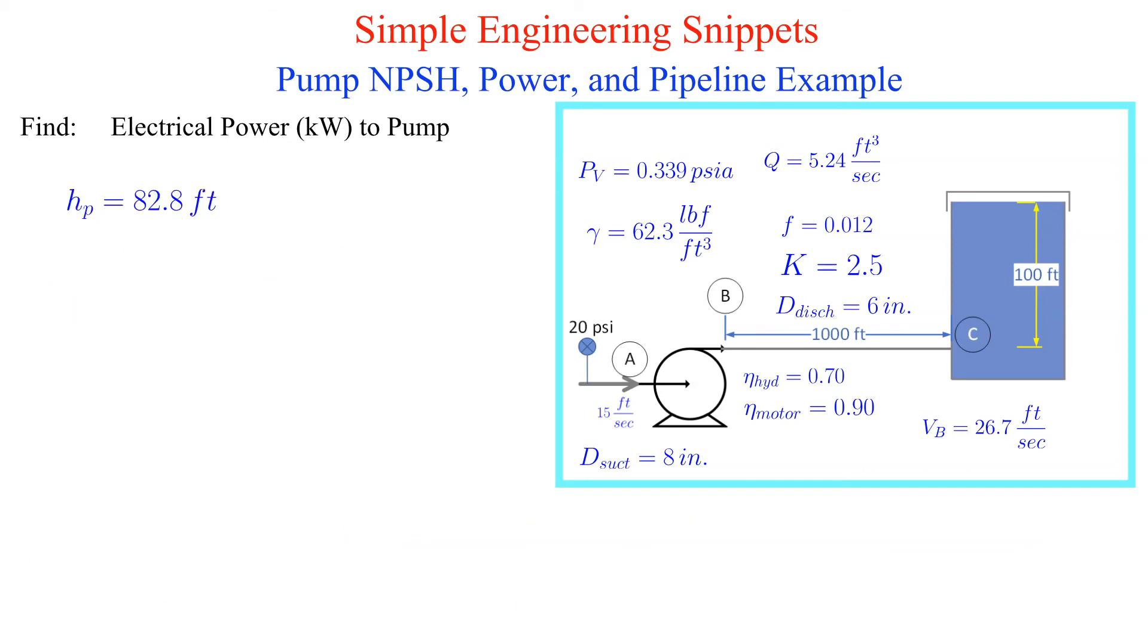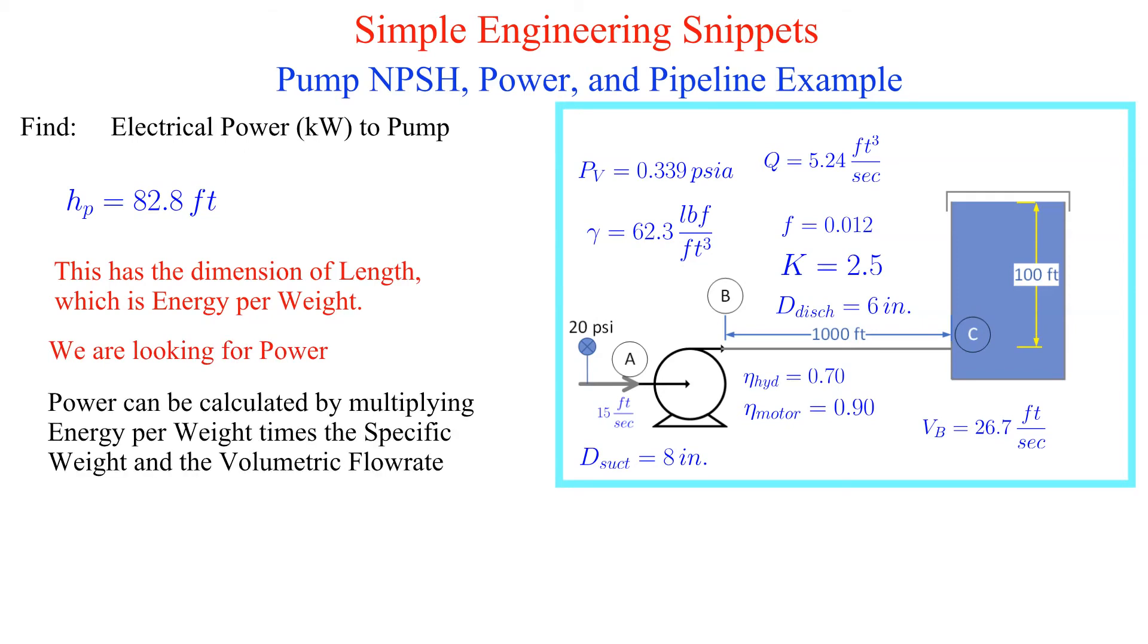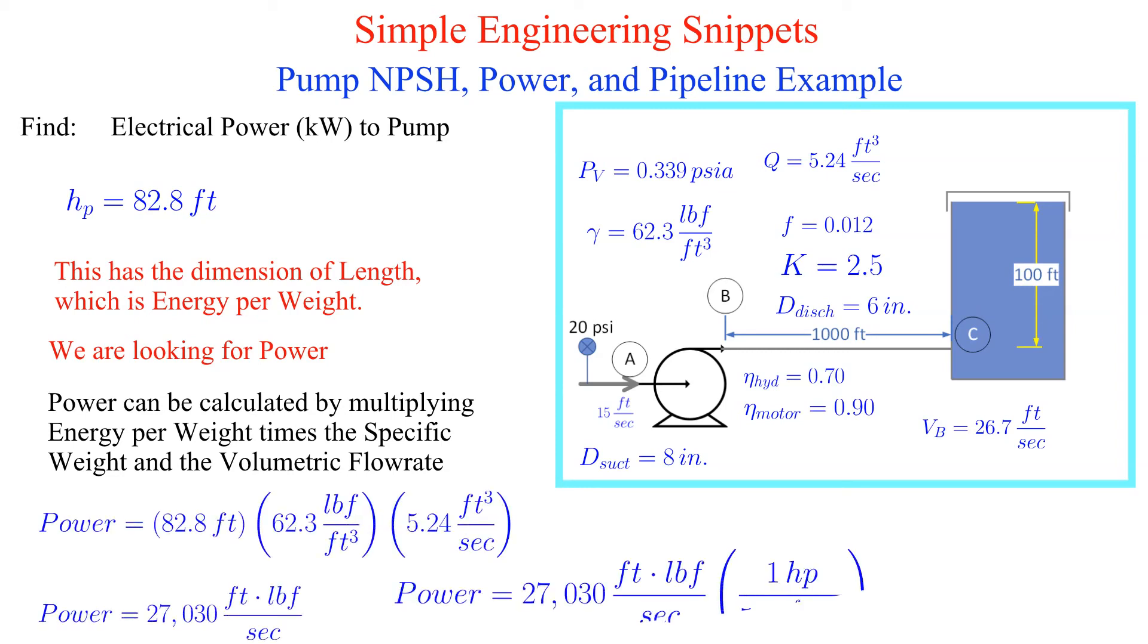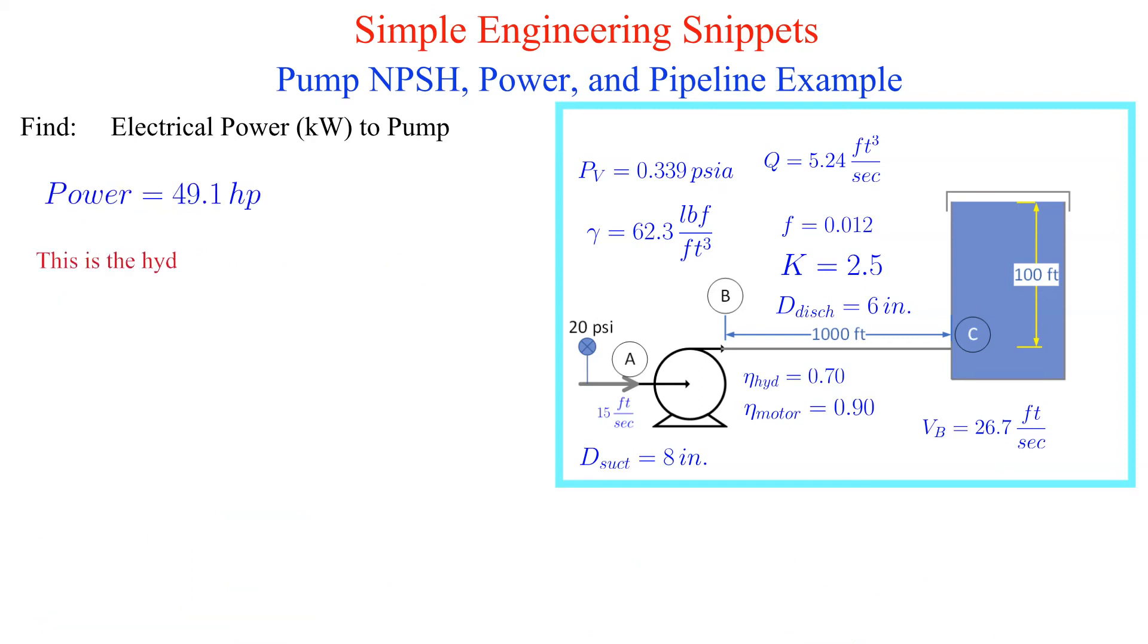We found the pump head but we are looking for the electrical power to the pump. The pump head has dimensions of energy per weight so we can obtain the hydraulic power by multiplying the pump head by the volumetric flow rate and the specific weight. These are all known. I chose to convert the answer to horsepower although that is not really necessary. The hydraulic power is 49.1 horsepower. This is the power that the pump is adding to the fluid. We want to calculate the electrical power supplied to the pump motor so we're still not done.